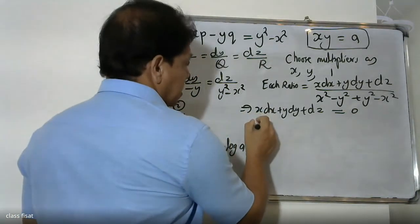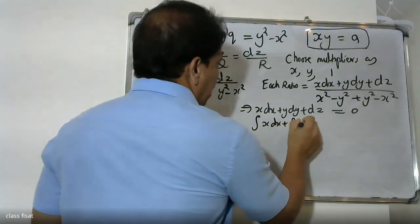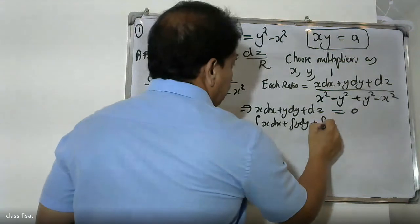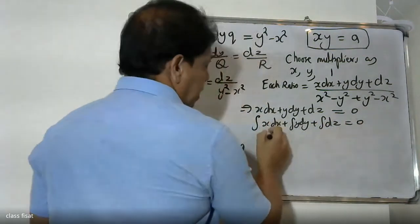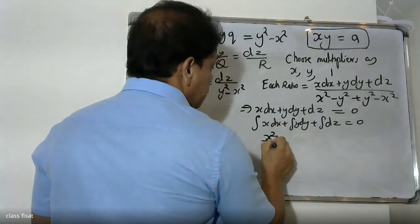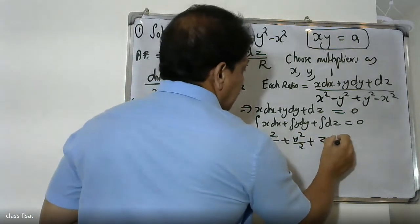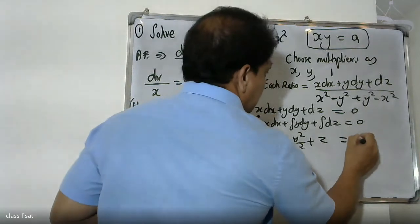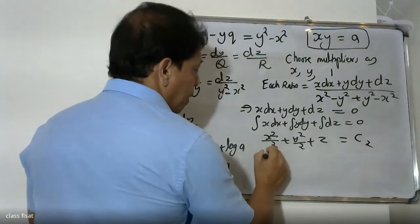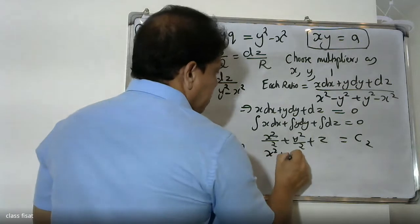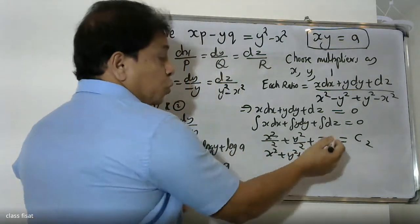Integrating: integral of x dx plus integral of y dy plus integral of dz equals 0. This gives x²/2 plus y²/2 plus z equals c. Multiplying through by 2: x squared plus y squared plus 2z equals 2c.